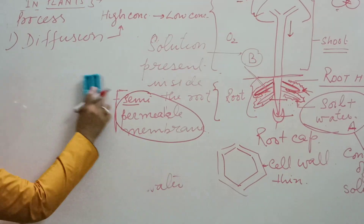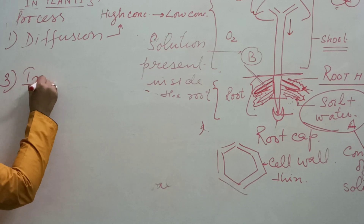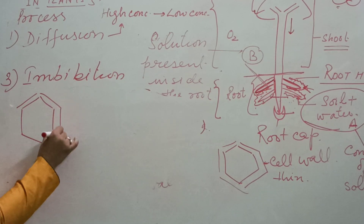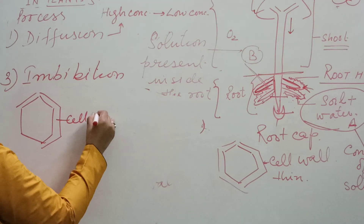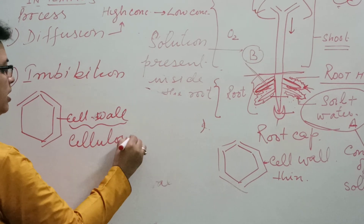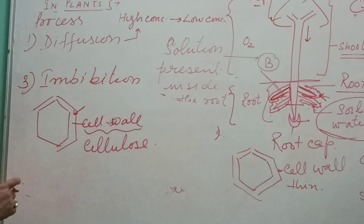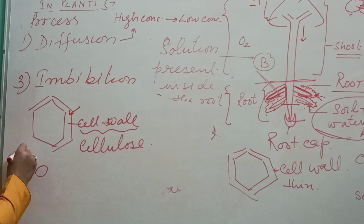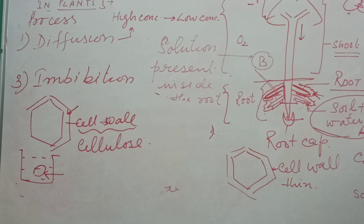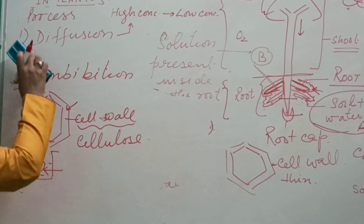The third process is imbibition — a type of surface absorption of water. The water is absorbed by the surface of the cell. The cell wall is made up of cellulose, which is water-loving, so it absorbs water from the surface. It is also a type of passive absorption. When we soak a seed inside water, the seed absorbs water from the surface — this is an example of imbibition. Swelling of doors and window frames during the rainy season is also an example of imbibition.